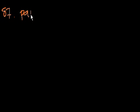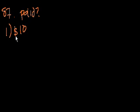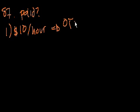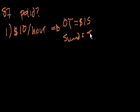Statement 1 tells us the employee's regular hourly rate is $10 per hour. Based on that, we know overtime is 1.5 times, so $15 an hour, and Sunday is double, $20 an hour. But we still don't know how much they were paid, because we don't know how many hours they worked and when those hours happened to be. So it's still not enough information.